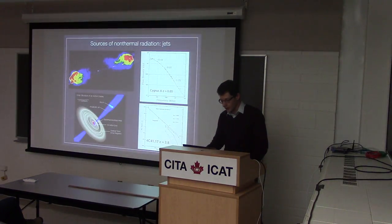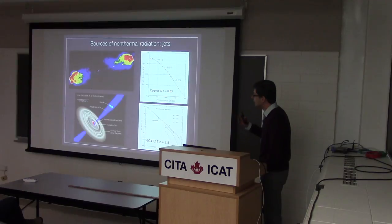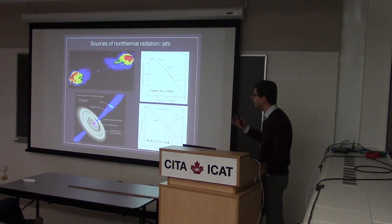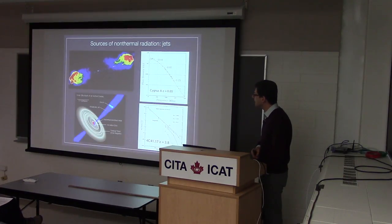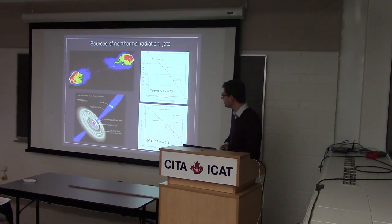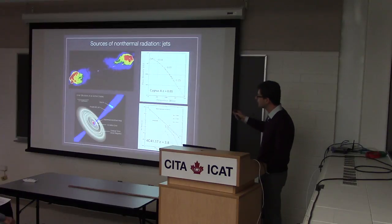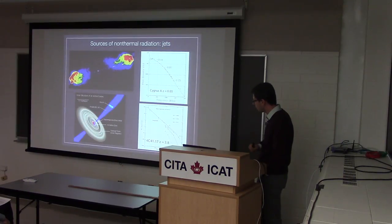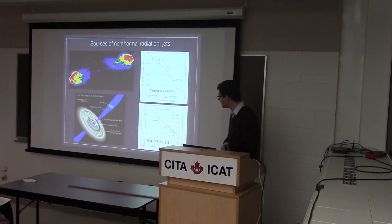Moving on to other sources, we have relativistic jets with Lorentz factors on the order of a few to 10. They emit radio emission when the jets collide with the interstellar or intercluster medium, and also emit emission along the jet, showing multi-decade frequency power laws.